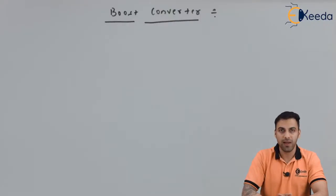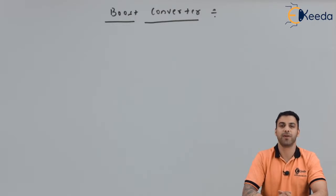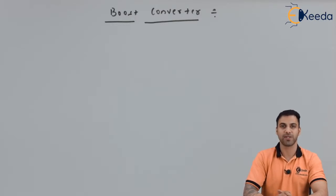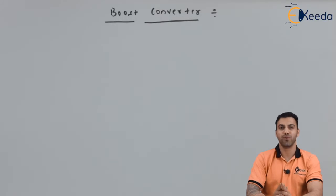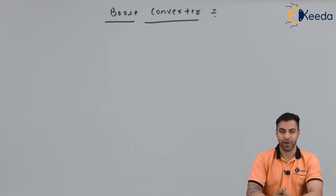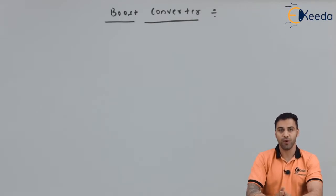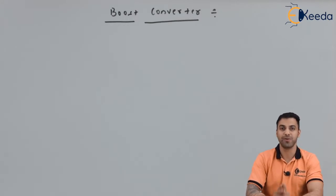In the earlier lecture we discussed about what a buck converter is. A buck converter is a device which converts a high value of DC input to a comparatively low value of DC output. However in this video we are going to discuss about what a boost converter is. A boost converter, as the name specifies, converts a low value of input DC voltage to a comparatively high value of output DC voltage.